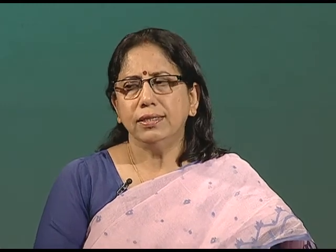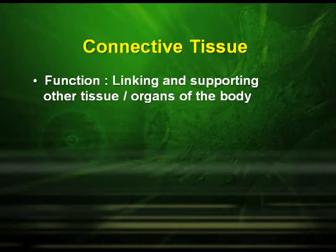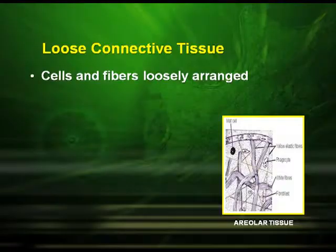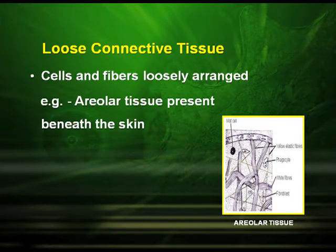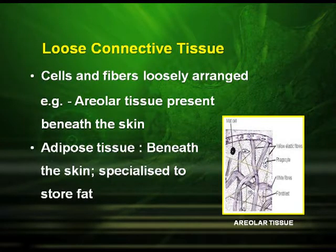The next type of animal tissue is the connective tissue, whose function is linking and supporting other tissues and organs of the body. There are three types: loose connective tissues, dense connective tissues, and specialized connective tissues. In loose connective tissue, the cells and fibers are loosely arranged. Examples include areolar tissue and adipose tissue, both found beneath the skin, with adipose tissue responsible for storing fat.